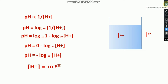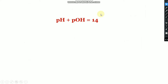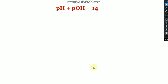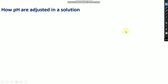The total of pH and pOH is 14. Using this relationship, if you have the pH value of a solution you can find the hydroxide ion concentration or the pOH value.